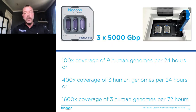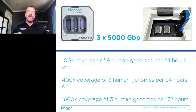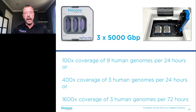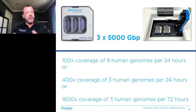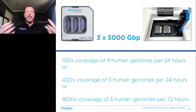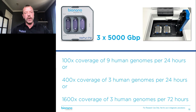With this, we can collect 100x coverage of nine human genomes per day. Or you can run the chips longer and collect as much as 400x on three samples per day. We're even allowing you to collect as much as 1600x coverage — that run can take anywhere between two and four days for three samples. So you can collect a massive amount of data, and I'll tell you in a minute why you would want to do that.